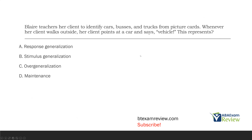Blair teaches her client to identify cars, buses, and trucks from picture cards. Whenever a client walks outside, her client points at a car and says 'vehicle.' This represents what? This is a generalization question, and when we're dealing with generalization questions we have to consider: what are we teaching, and then how is it generalized?